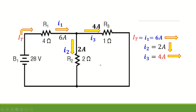To summarize: total current, which is also equal to I1, is 6 amperes going to the right; I2 is 2 amperes going down; and I3 is 4 amperes going to the right.